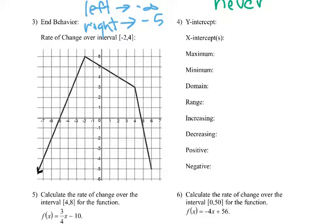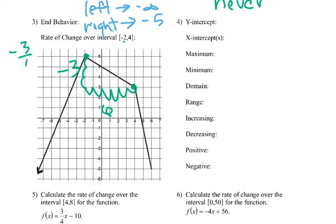Rate of change — we go to negative 2. At negative 2, our graph is right up there. Positive 4, our graph is right here. So that goes down negative 3, and we go over 1, 2, 3, 4, 5, 6. So negative 3 over 6, which can reduce to negative one half for our rate of change.